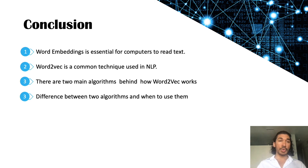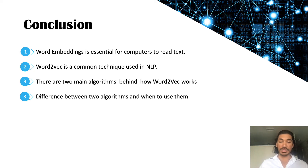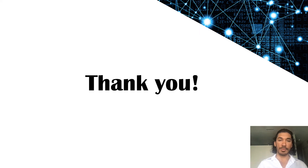In this video, I have shown how word embedding is essential for computers to read text, explained the Word2Vec model and why it is an important technique for natural language processing. I have explained the two main algorithms that make Word2Vec possible — Continuous Bag of Words and Skip-gram — and shown some steps to differentiate between those two algorithms and when to use them depending on the type of problem you are trying to solve. Thank you so much for watching this video. If you have any questions, please leave them in the comments.